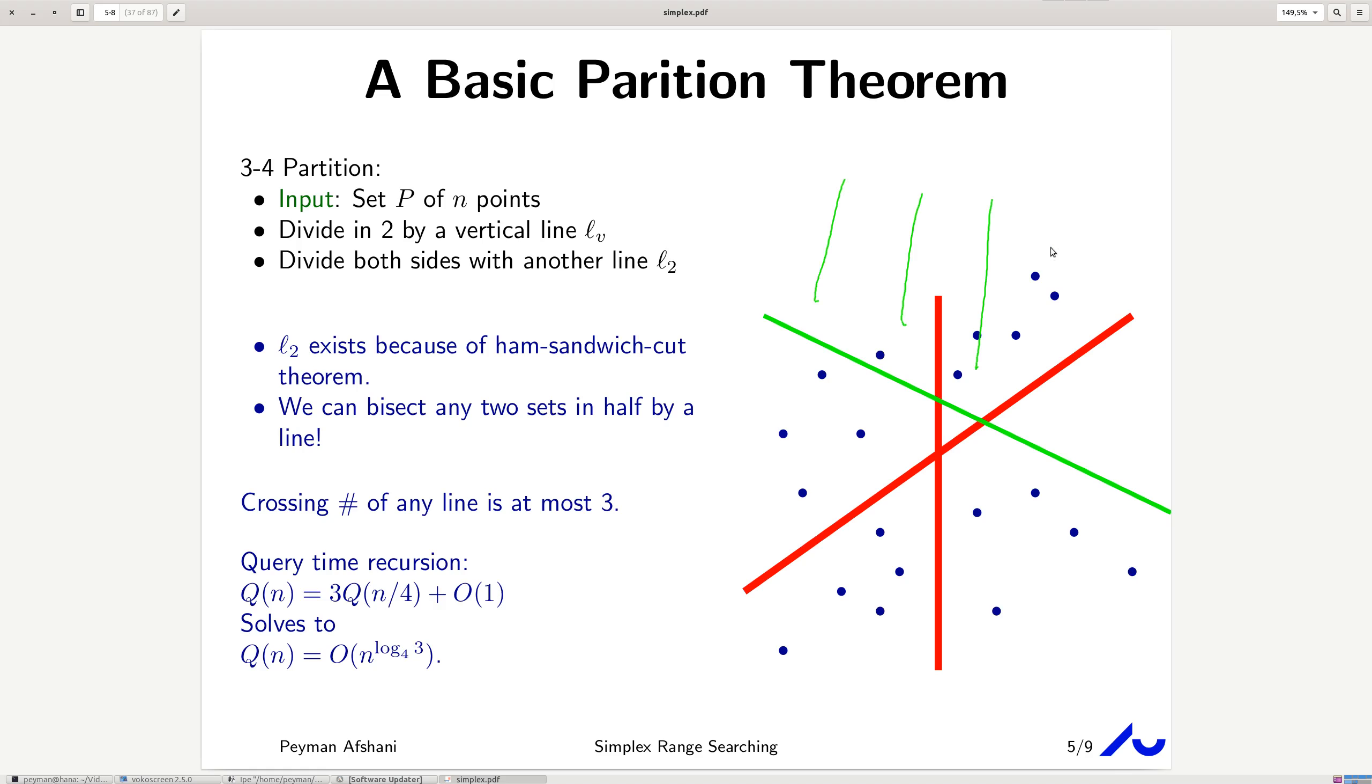Because now, if you want to count the number of points inside this half plane, you only need to recurse in three of the four subsets, and you know that, for example, here you would ignore this subset here. So, recursion becomes three times n over four, there are exactly n over four points in each subset, which, using Master theorem, solves to this.